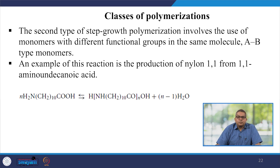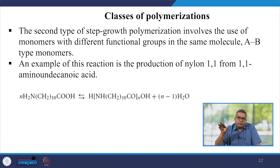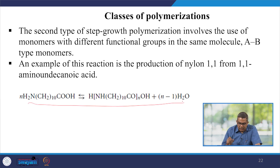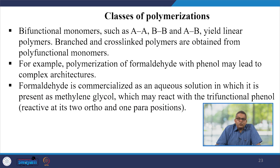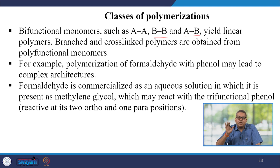The second type of step growth polymerization involves the use of a monomer with different functional groups in the same molecule — an AB type monomer. An example of this reaction is the production of nylon 11 from 11-aminodecanoic acid. Bifunctional monomers such as AA, BB, or AB yield linear polymers, whereas branched and crosslinked polymers are obtained from polyfunctional monomers.